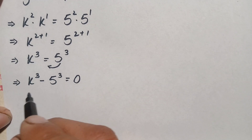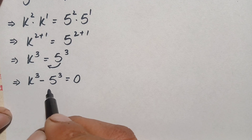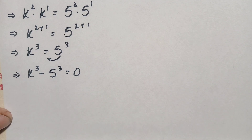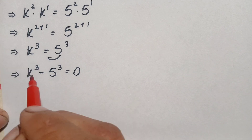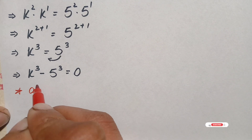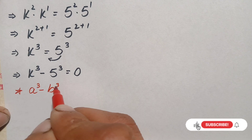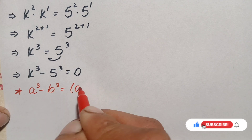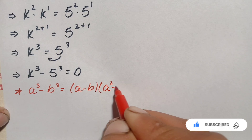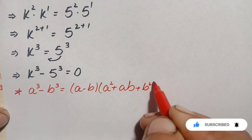Here both terms on the left hand side are in cubic form — k cubed and 5 cubed — so we will use the cubic algebraic identity: a cubed minus b cubed, which is equal to (a minus b) times (a squared plus a times b plus b squared).